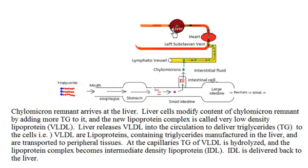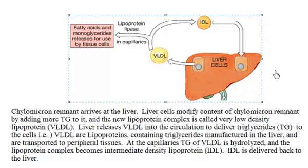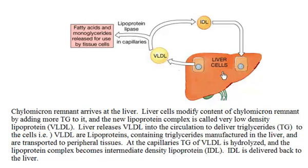The chylomicron remnant will then arrive at the liver. Once it gets to the liver, more triglycerides will be added to this chylomicron remnant. As the liver adds more and more triglycerides to it, this is called very low-density lipoprotein, or VLDL. This VLDL will leave the liver and transport triglycerides to the cells around the body.